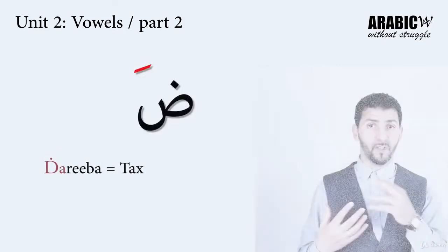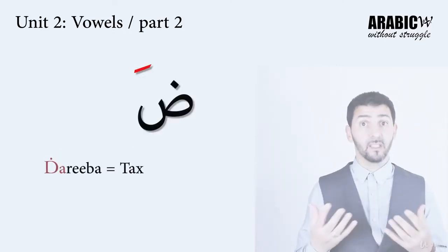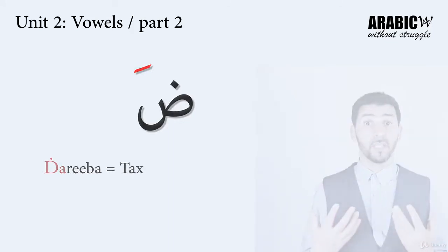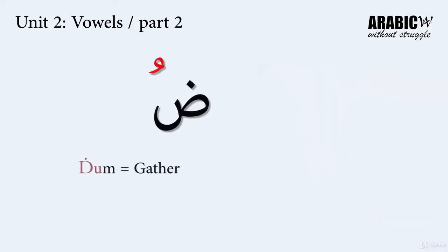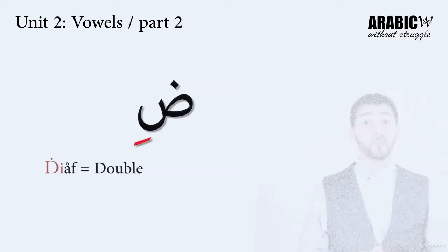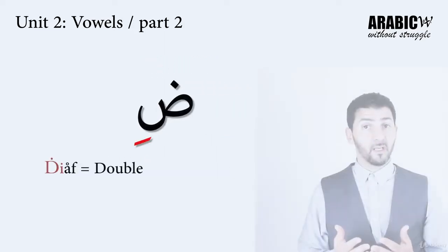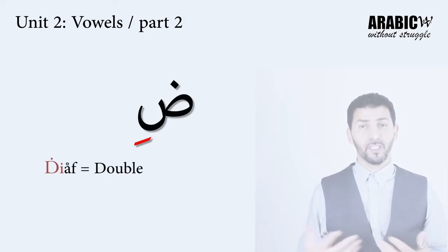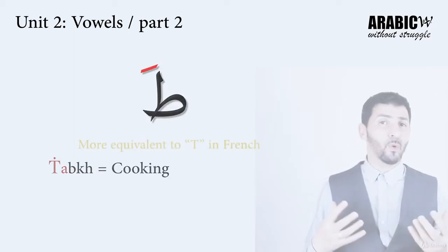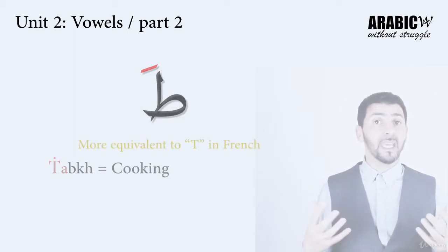ضاد with فتحة makes ضا, like ضريبة — meaning 'tax'. ضاد with ضمة makes ضو, like ضم — meaning 'gather'. ضاد with كسرة makes ضي, like ضعف — meaning 'double or twice'.